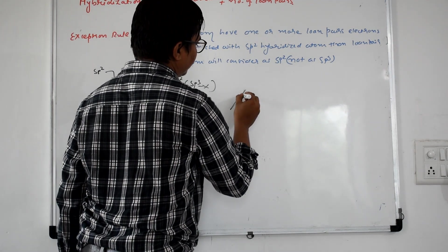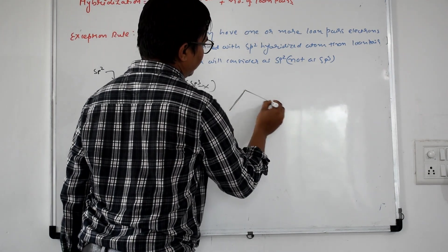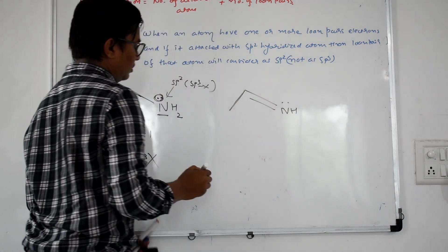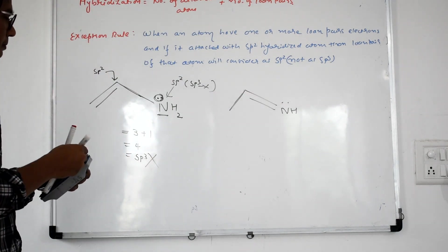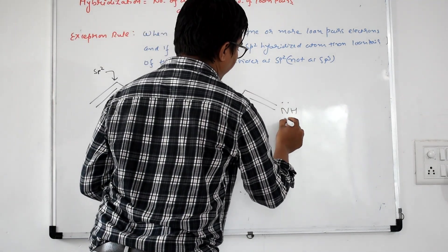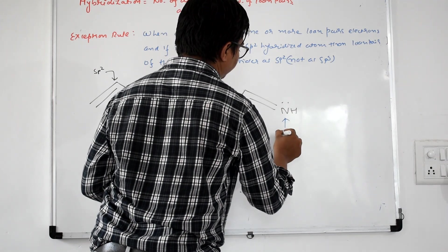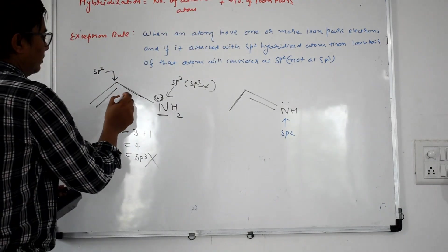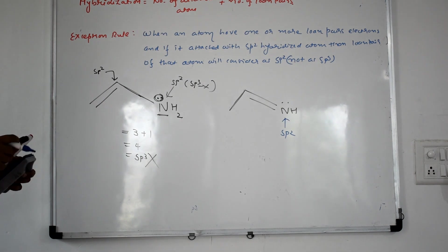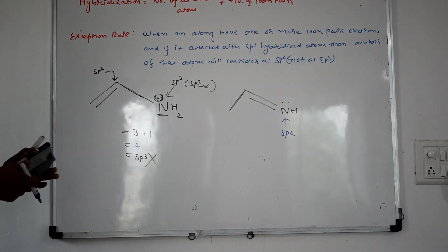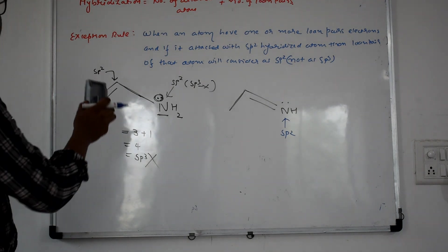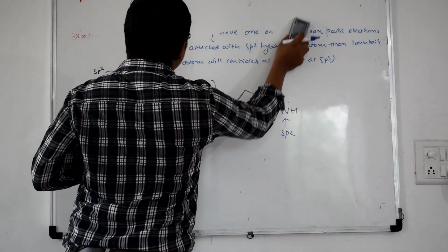If your molecule has a directly attached pi bond — a single pi bond — you will say it is sp2 and the exception rule will be applicable to this atom. Now let us understand another example of aromaticity.